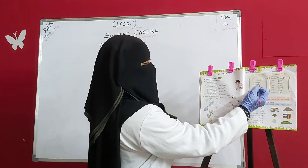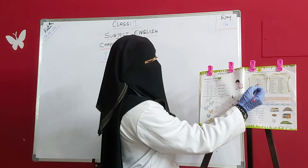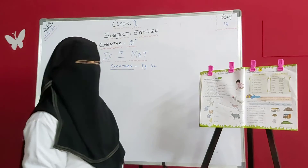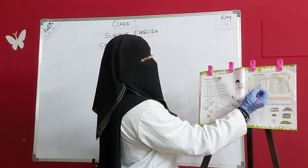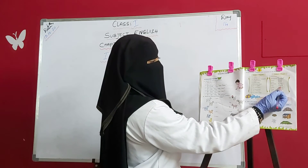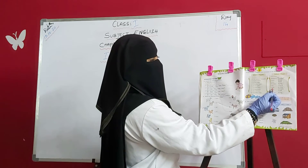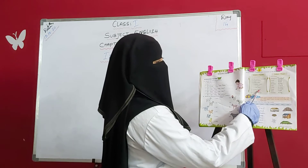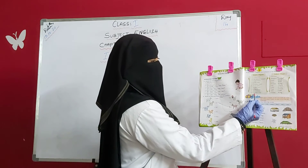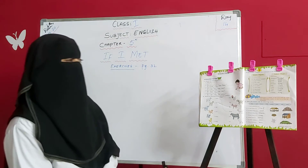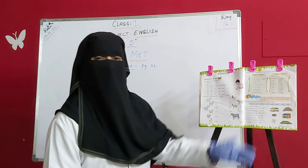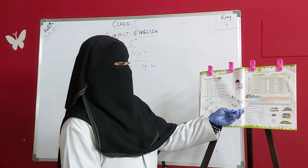The lion roars — lion is singular, the action word is plural. When lions are plural, the action word is singular. A donkey brays, donkeys bray. A cat mews, cats mew. A cock crows, cocks crow. A frog croaks, frogs croak. An owl hoots, owls hoot. A cuckoo sings, cuckoos sing. When the noun is singular the action word is plural, and when the noun is plural the action word is singular.